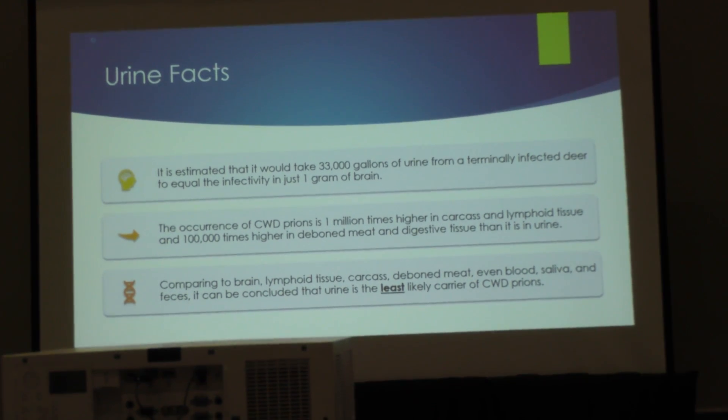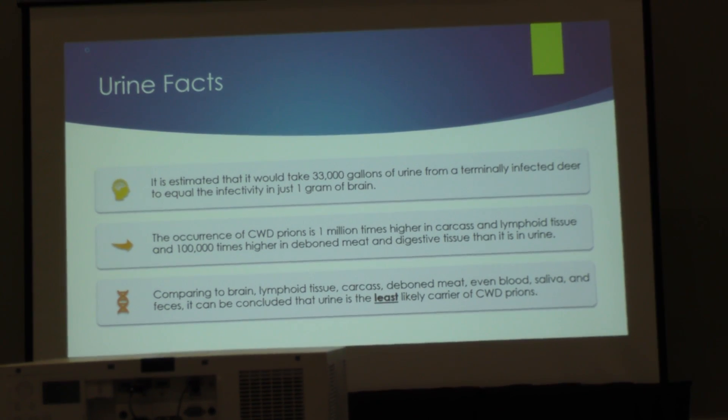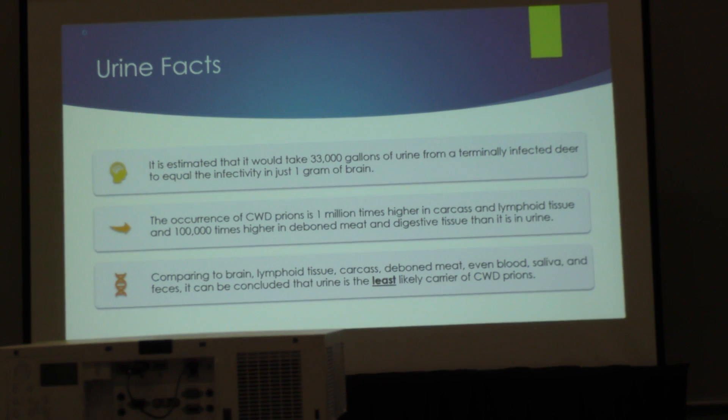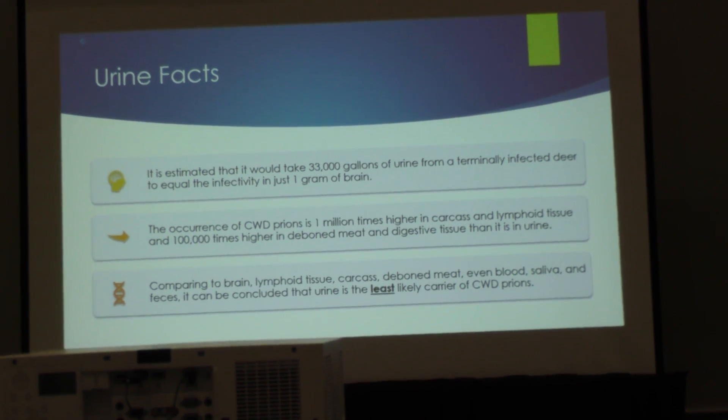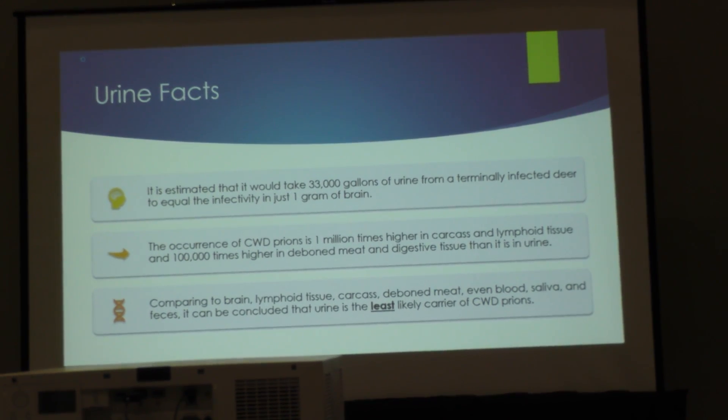Below lymphoid tissue it becomes muddier, but digestive tissues come next, then muscle, and then below that, infectivity in blood, saliva, feces, and urine. Importantly, deboned meat was injected into the brains of mice — not concentrated — and every single one of those mice succumbed to CWD. That suggests that levels in muscle are significantly higher than in urine.